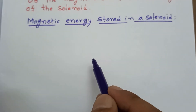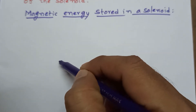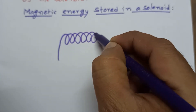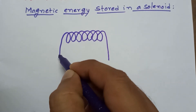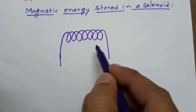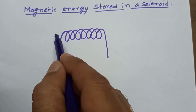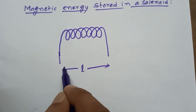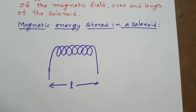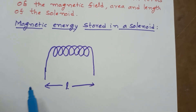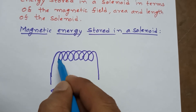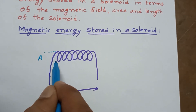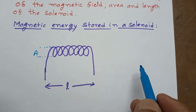First of all, we will draw the solenoid. A solenoid appears like this — a spiral shape. This is a solenoid. The length of the solenoid may be L, and the area of the solenoid we take as A.